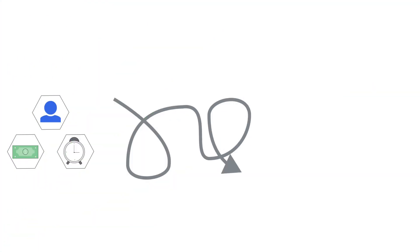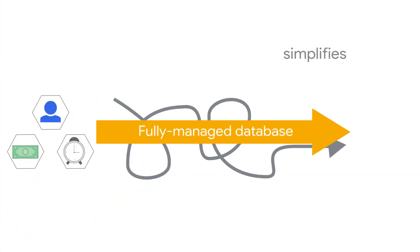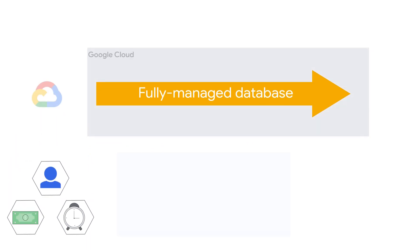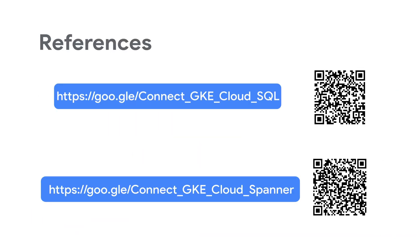Using a fully managed database in Google Cloud simplifies the process of provisioning and maintaining the database and frees up your resources so you can focus on building your applications. For more detailed steps on how to connect your GKE applications to either Cloud SQL or Cloud Spanner, check out our documentation. Thanks for watching.